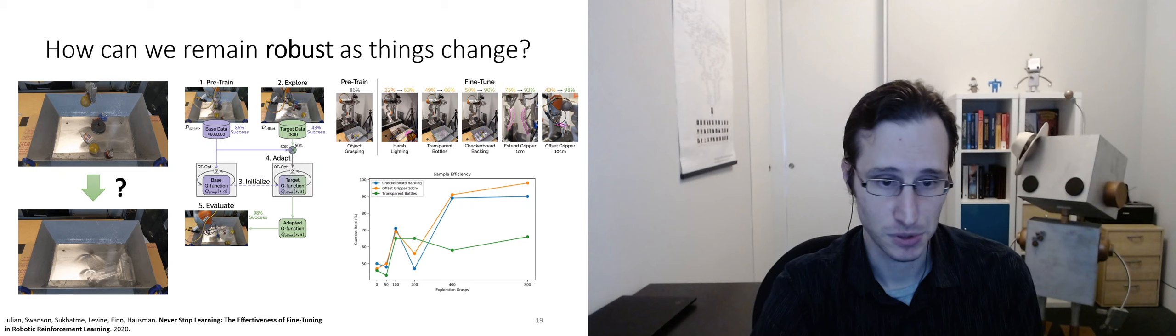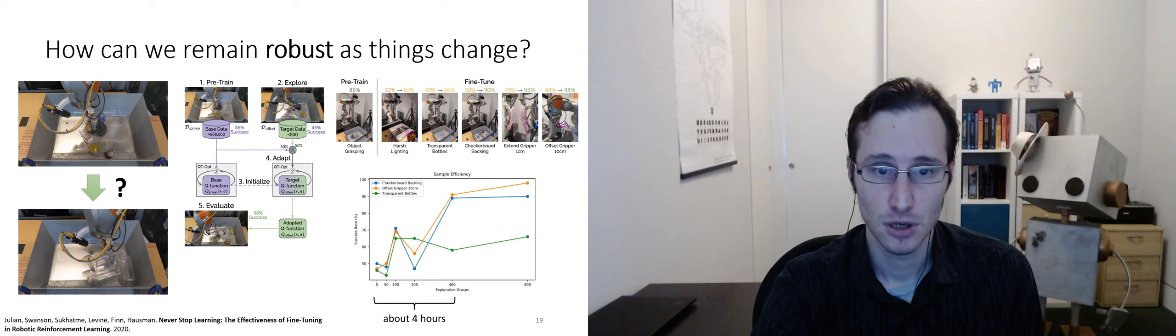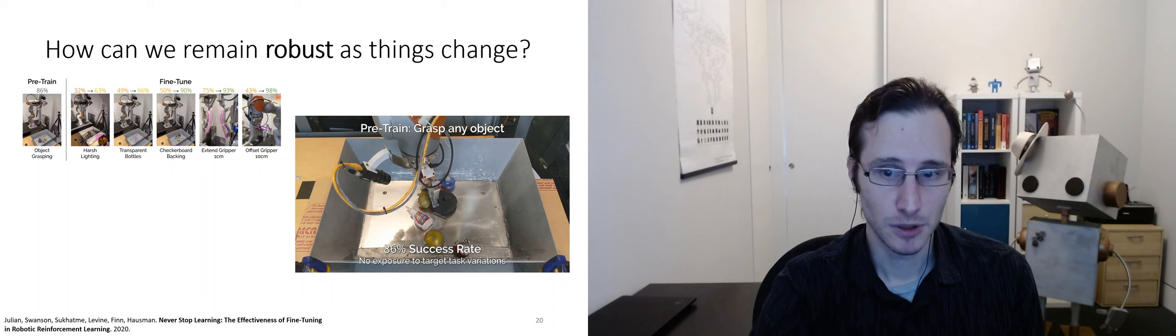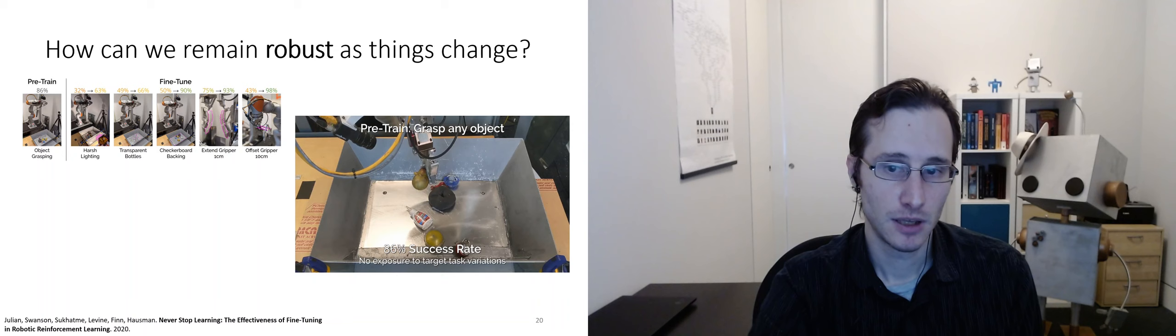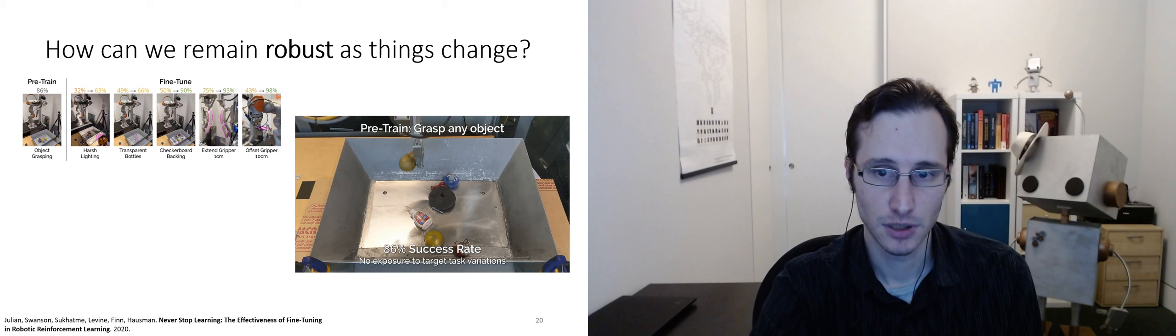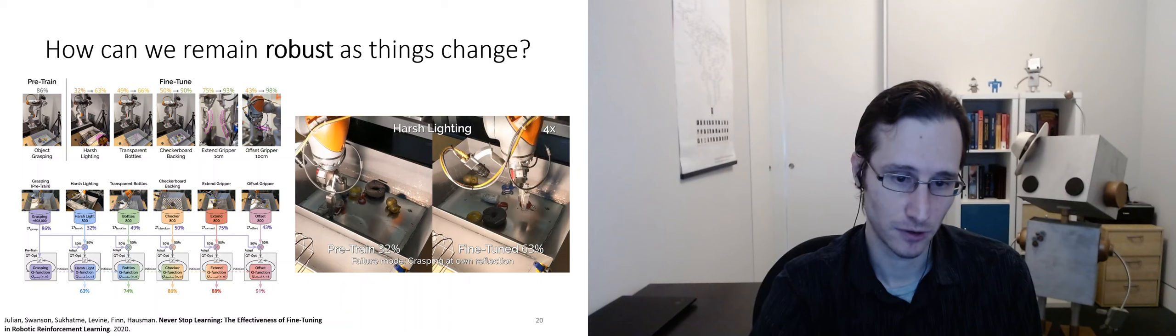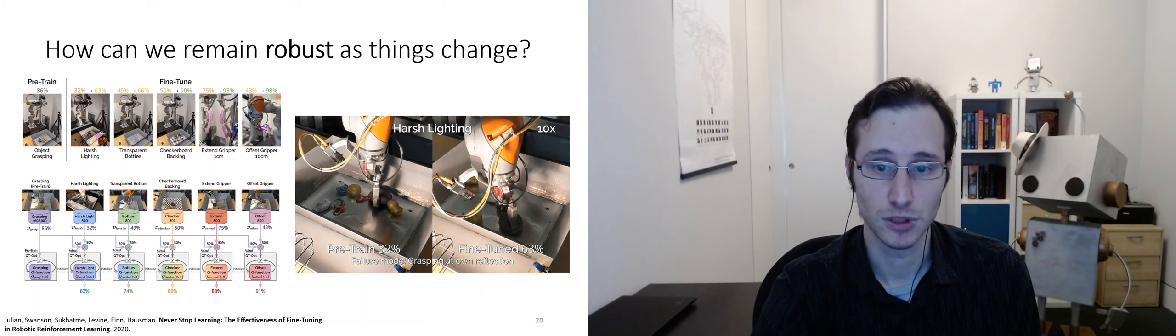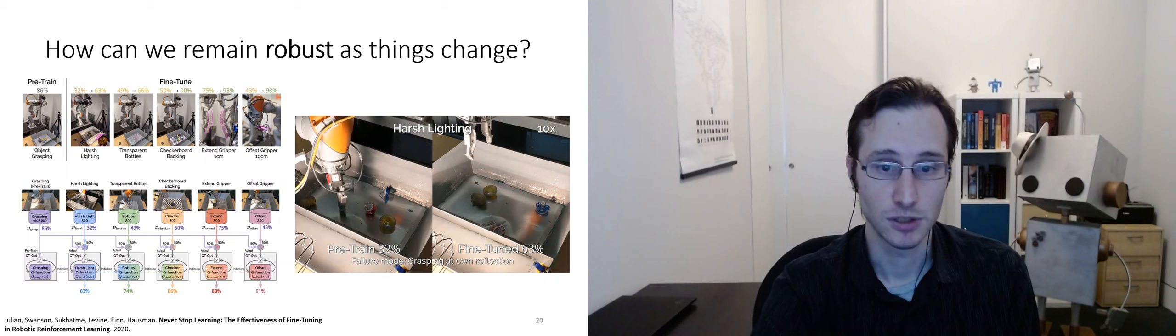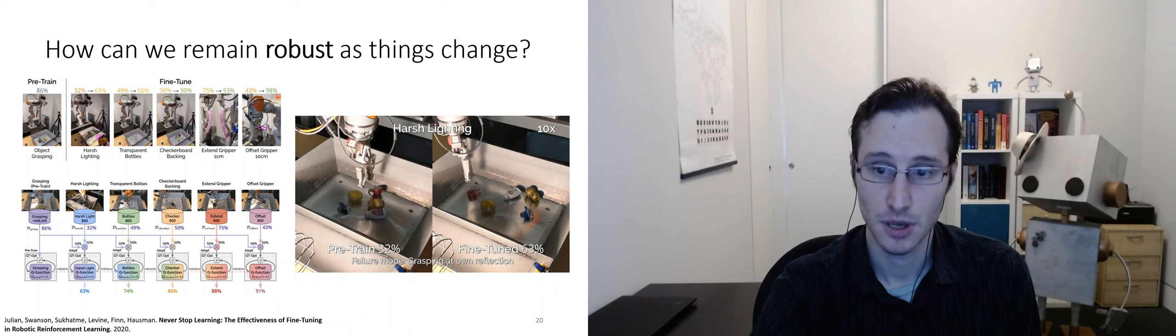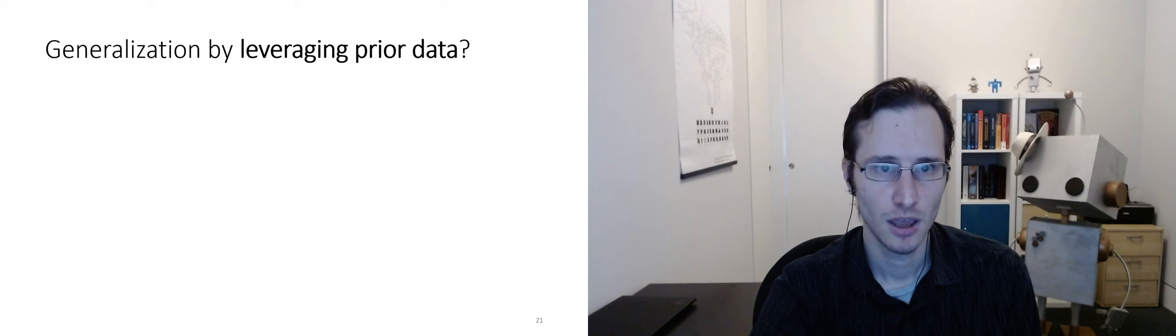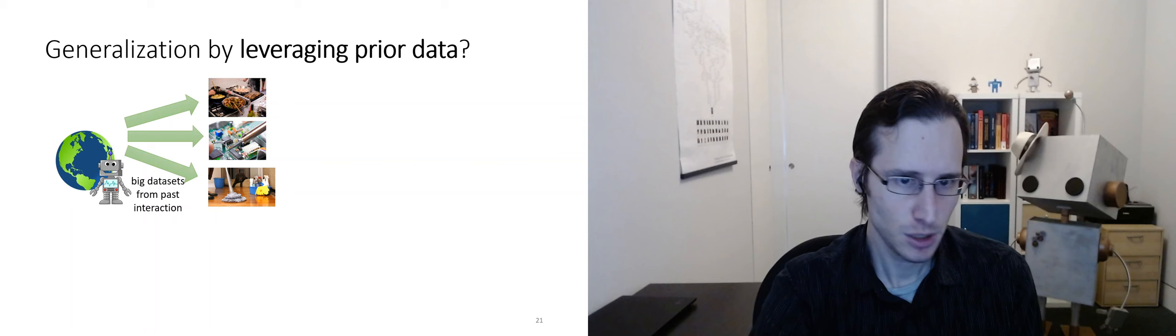In this case, the prior training data consisted of 600,000 episodes collected over several months. Adaptation to many of these tasks took only about four hours. So, here's a video of this in action. The initial system has a success rate of 86%. And then, as things change in the environment, the success rate is going to drop. So, here we have harsh lighting. It drops to 32%. After fine-tuning, it goes back up to 63%. And we can instantiate this as a lifelong system. We can observe these changes one at a time, adapt to each one in turn, and become better collectively at the entire range of different perturbations. Not only does this present interesting challenges, it also presents interesting opportunities.